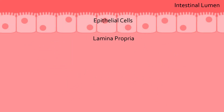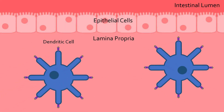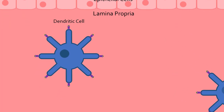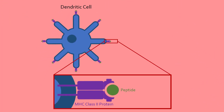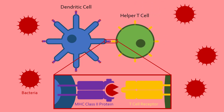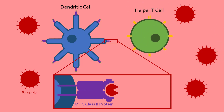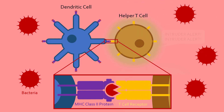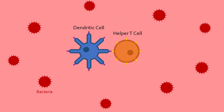Now the immune system gets involved. The intestinal tissue is constantly patrolled by dendritic cells, which play a huge role in alerting the immune system if they find anything harmful. They do this by presenting peptides they have found in the environment on their surface using special display proteins called MHC class II proteins. During a bacterial infection, the peptides displayed on the surface of dendritic cells would likely be from a bacterial protein. Helper T-cells, the main regulators of the adaptive immune system, will then check if their unique T-cell receptor can bind to the peptide. If it can, that helper T-cell is activated, proliferates, and starts the immune response.